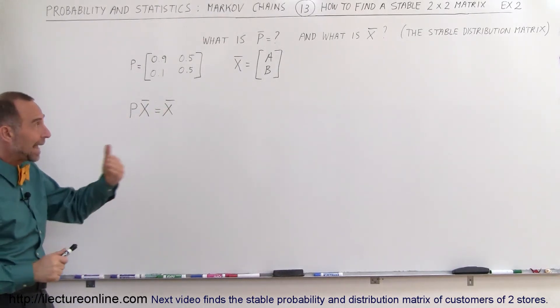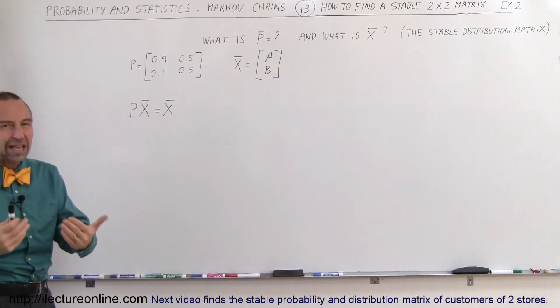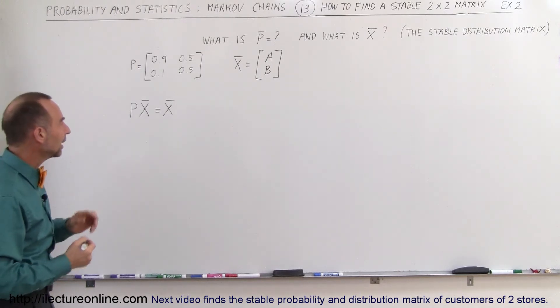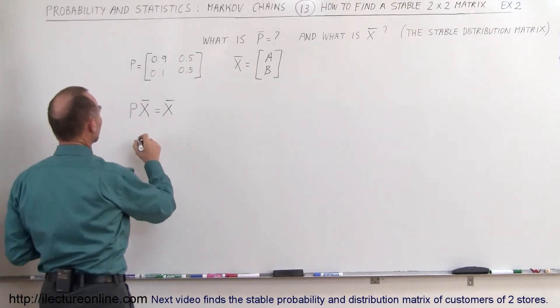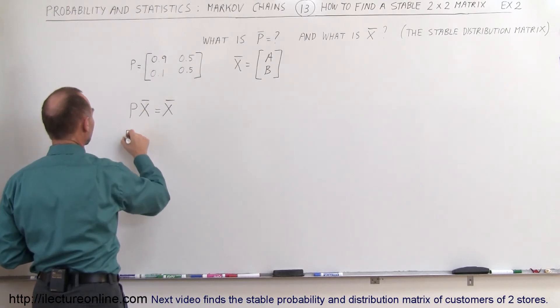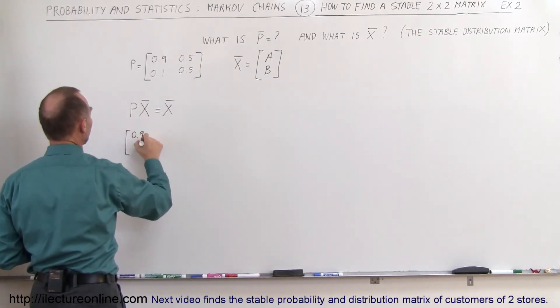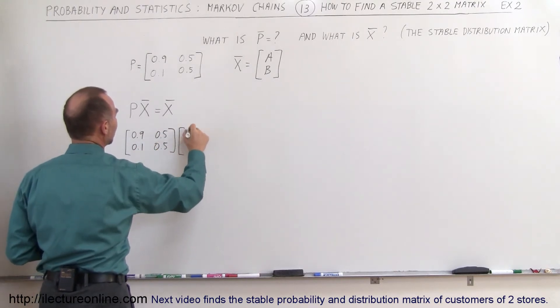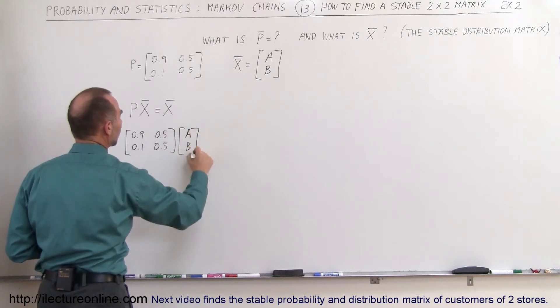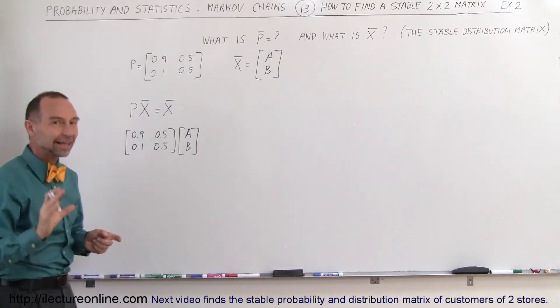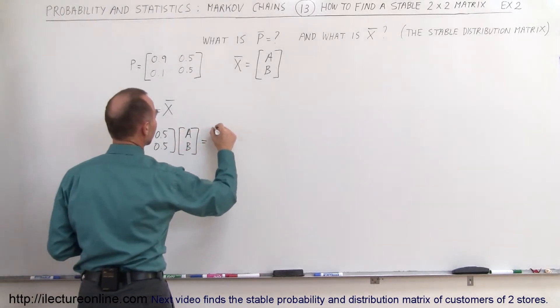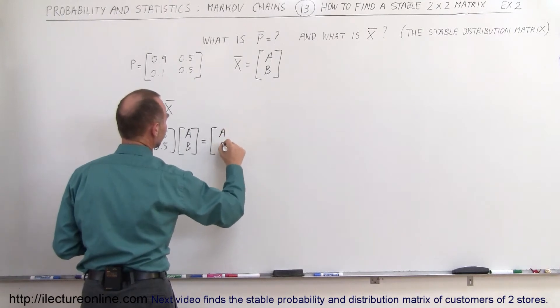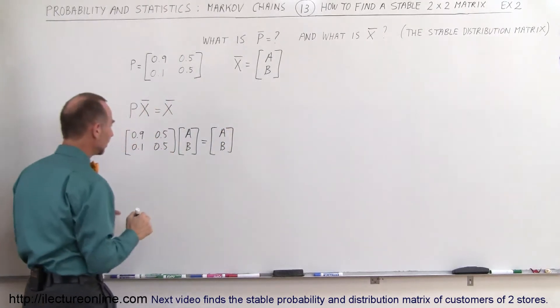We need to find out what those numbers are, what A and B are, in other words the states A and B. To do that, we're going to multiply the P matrix, 0.9, 0.1, 0.5, 0.5, and multiply that times A and B, which are assumed to be the final states, and then that will have to equal A and B. Let's go ahead and do that.